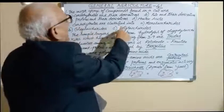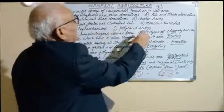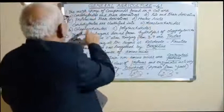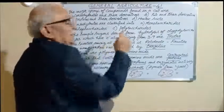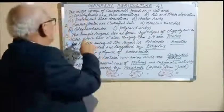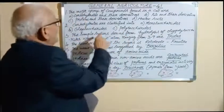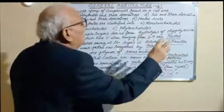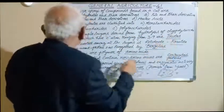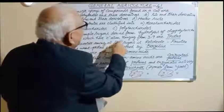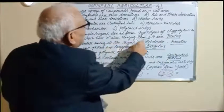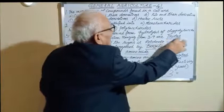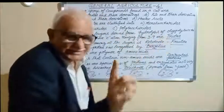Carbohydrates are classified into monosaccharides, oligosaccharides, and polysaccharides. The simple sugars derived from hydrolysis of oligosaccharides and polysaccharides which have carbon atoms ranging from 3 to 9 are called trioses (T-R-I-O-S-E-S).